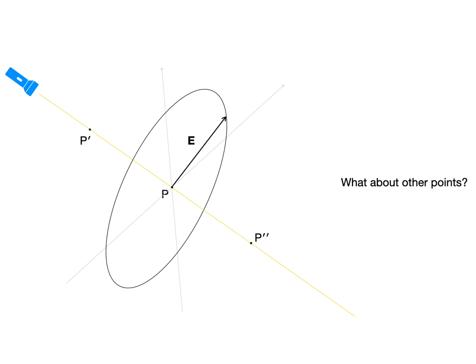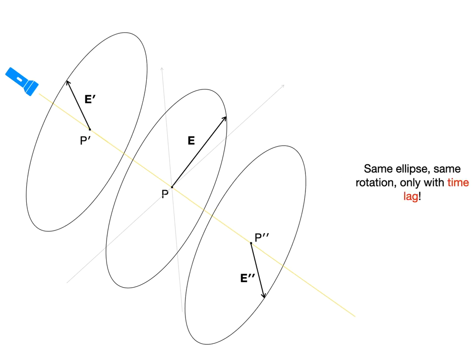Now what if we consider other points like p prime or p prime prime? Are polarization, color and intensity the same as they are at p? The answer is yes, they are all the same, because the electric field vectors rotate the same way everywhere. There is only a time lag between them, which varies continuously along the light ray. So it makes sense to talk about the color, the intensity and the polarization of the light ray.